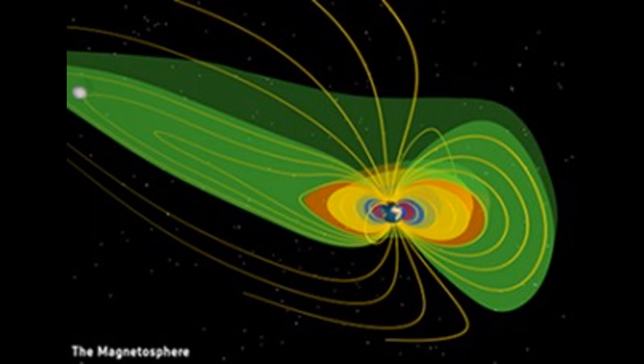All of the plasma in the magnetosphere comes from either the ionosphere or the solar wind. One of the great mysteries of the magnetosphere is how all of these different plasmas are produced from only those two starting points.